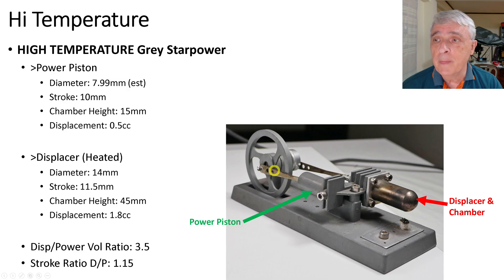The displacer, which is over here, this chamber, the diameter is 14 millimeters. The stroke back and forth is 11.5 millimeters. The chamber height, which again I should have called length, but from here back to here, is 45 millimeters. And the displacement is 1.8 cc. The displacement to power volume ratio is 3.5, so huge compared to the others. And the stroke ratio is 1.15.